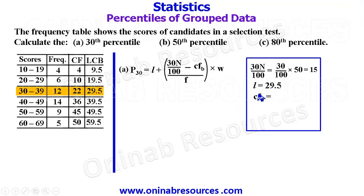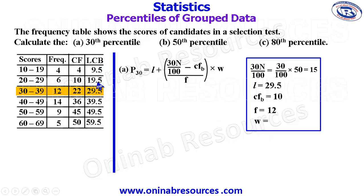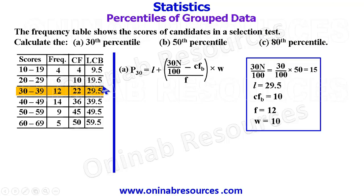The cumulative frequency before the 38th percentile is 10. The frequency of the 38th percentile is 12. For the class width, we obtain it from the lower class boundary: 39.5 minus 29.5 gives 10. Or 29.5 minus 19.5 also gives 10, representing the class width. We've gotten all the information required to calculate the 38th percentile.